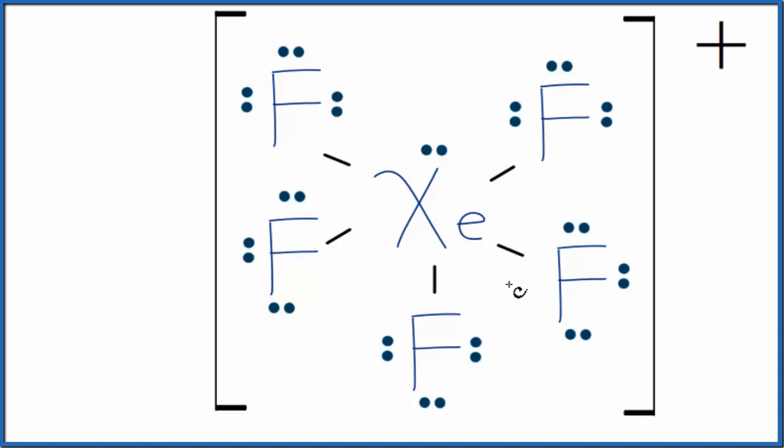So this is the Lewis structure for XeF5+. You will note that the xenon in the center has an expanded octet. That's okay. It can have more than eight valence electrons. If you need help writing the Lewis structure, there's a link in the description and at the end of the video.